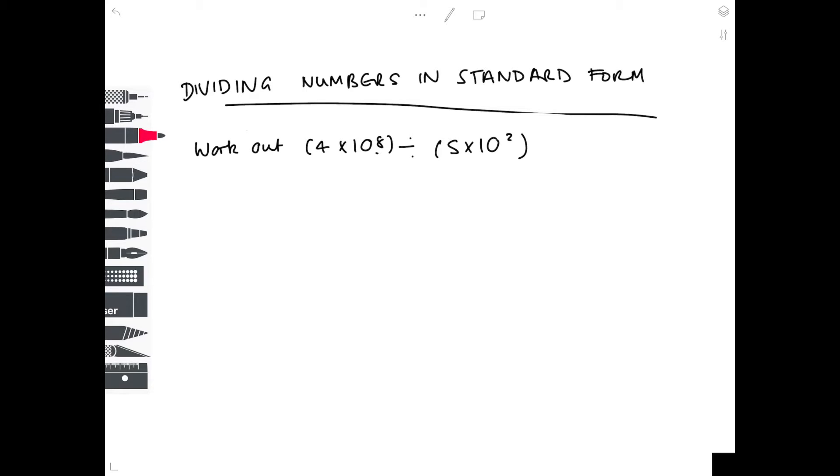So let's sort out those powers first of all. Because they're indices and you're dividing them, you simply have to take 2 away from 8 to get your new power, which is 6.